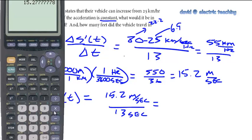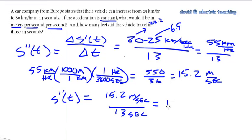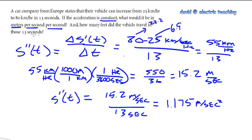Going back to the calculator and dividing the exact answer by 13, we see that our acceleration is approximately 1.175 meters per second per second. To understand what this means: I am changing my velocity by 1.175 meters per second every second. Sometimes we write the denominator as seconds squared in physics class. So this is our acceleration in meters per second per second.